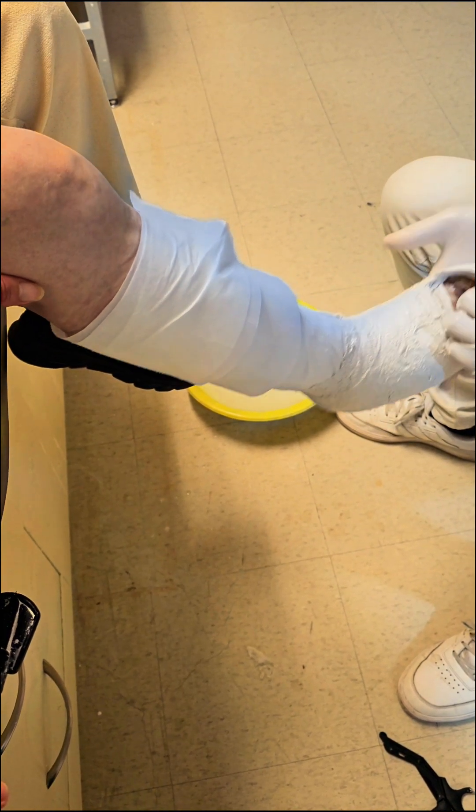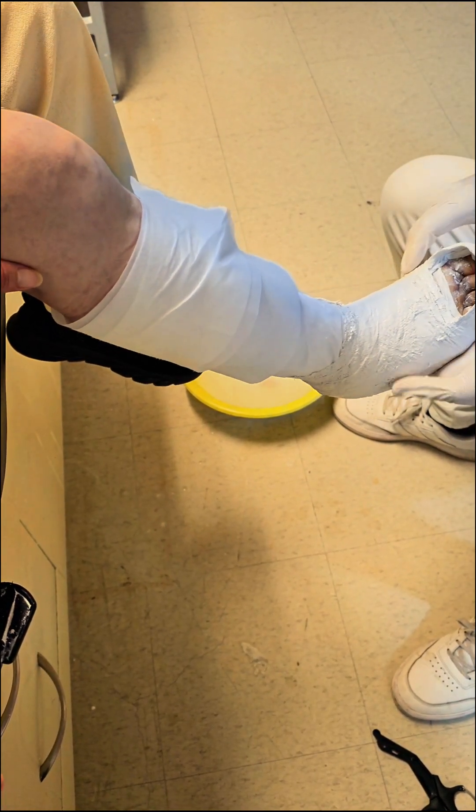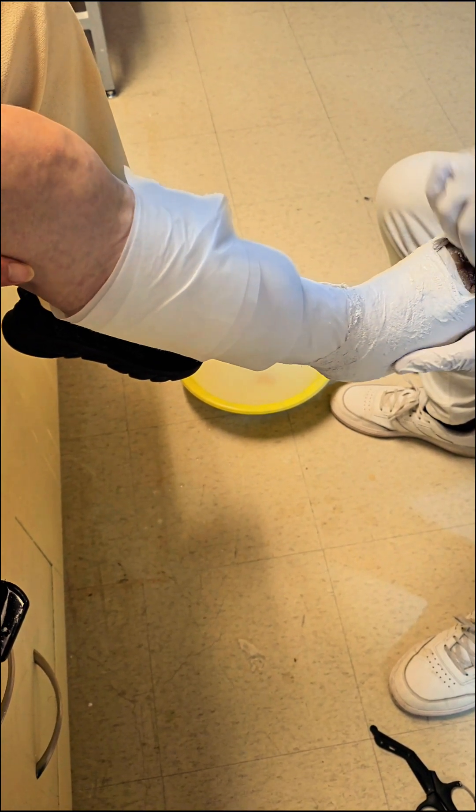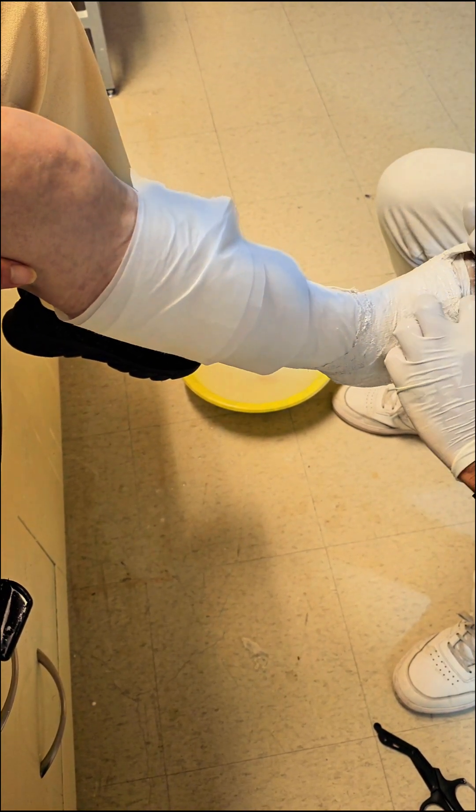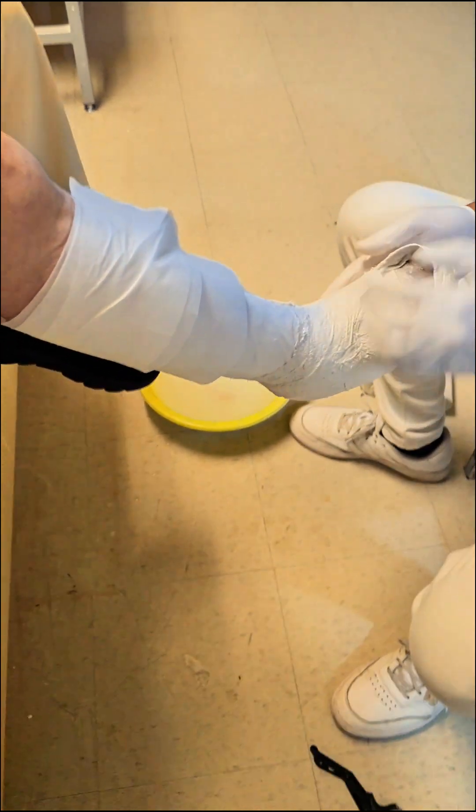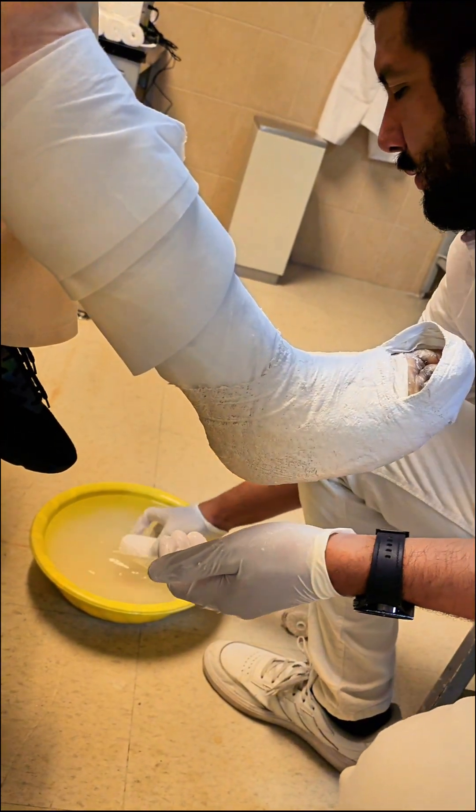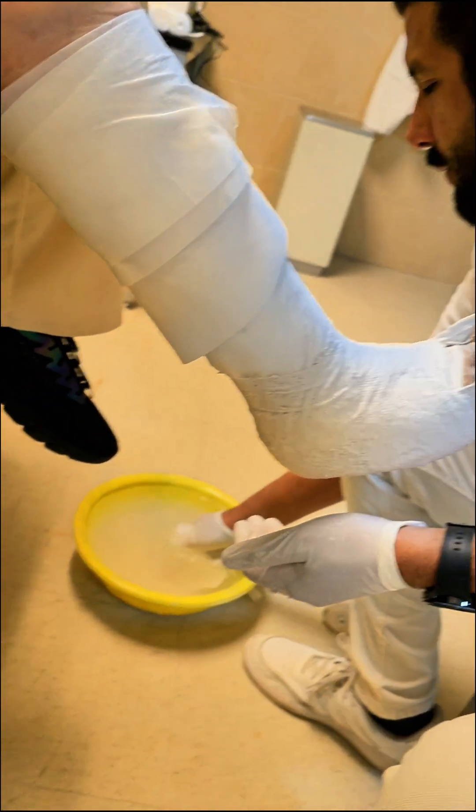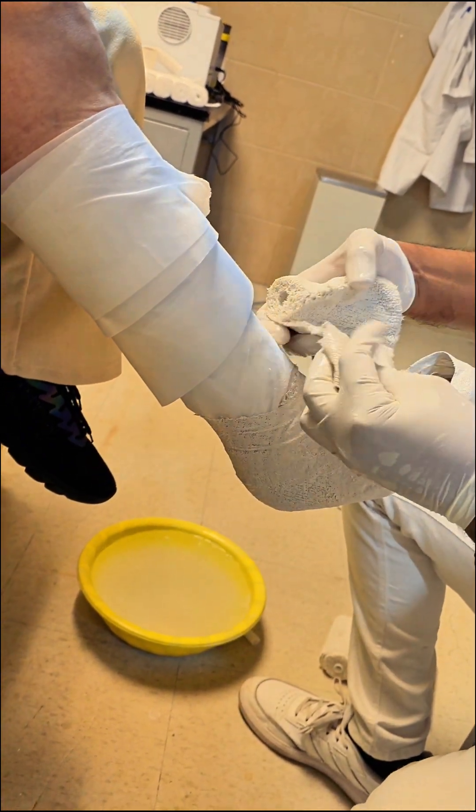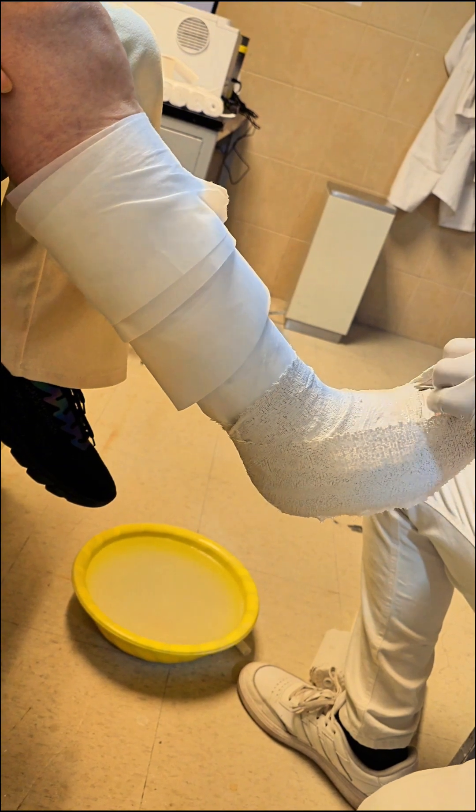Three: casting material. Using fiberglass or plaster, begin wrapping the material from the toes up to the mid-calf. The key is to ensure even coverage and avoid any tight spots that could restrict circulation. Four: molding. As the material begins to set, gently mold it to the contours of the foot, ensuring it provides support without being too tight. Pay special attention to the arch and metatarsals.